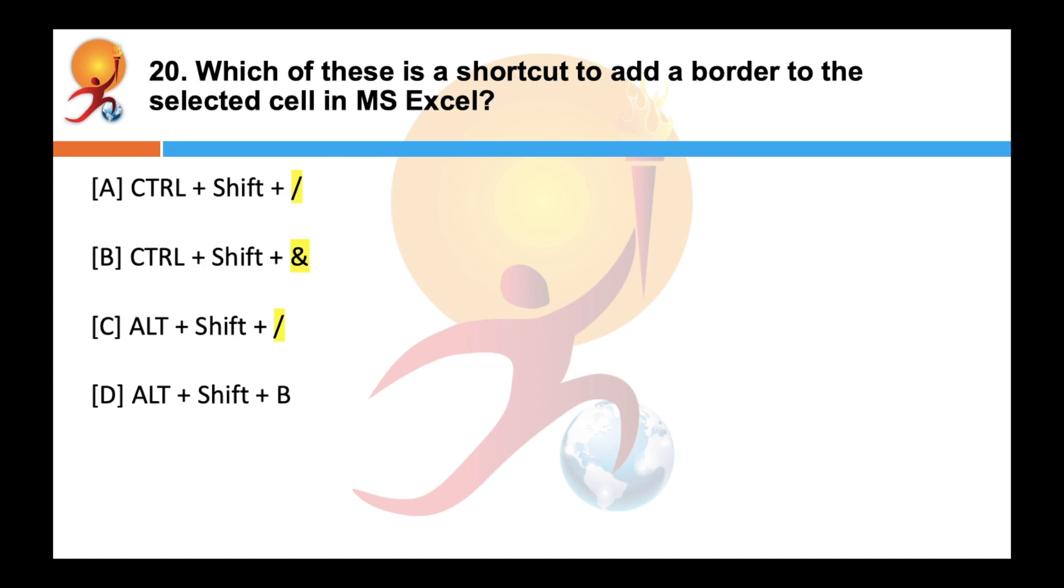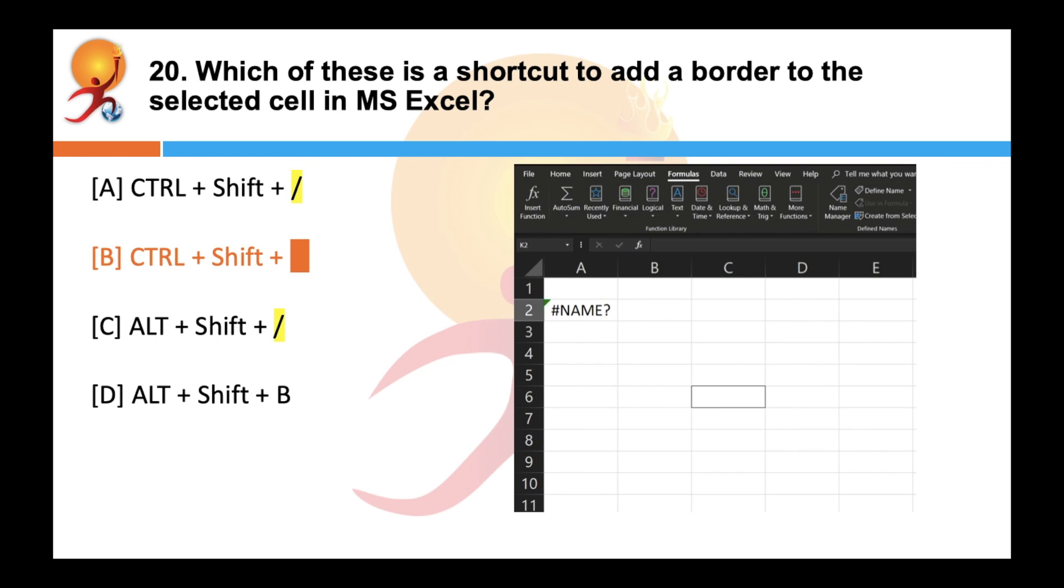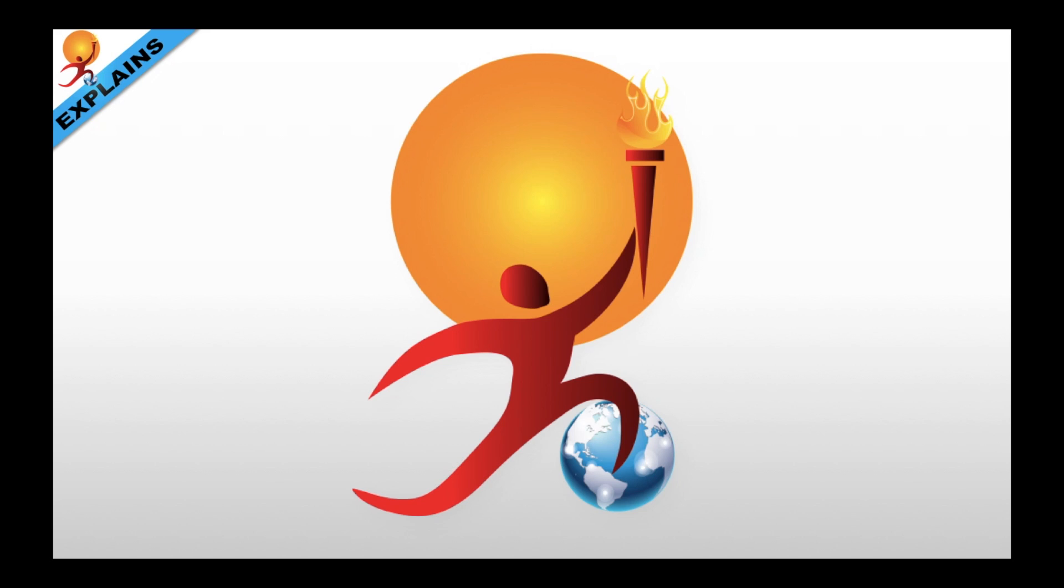Which of these is a shortcut to add a border to the selected cell in MS Excel? Correct answer is B. CTRL plus Shift plus AND is used to add a border to the selected cell. It is a shortcut to add a border to any of the active cell. If you have any doubts, feel free to comment. Thank you and see you in the next one.